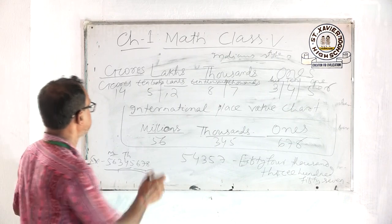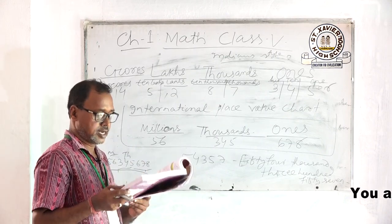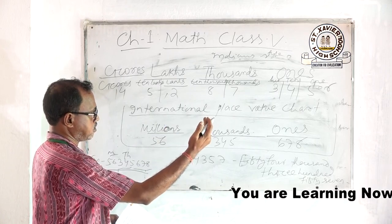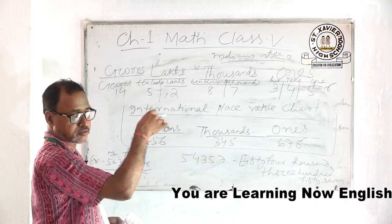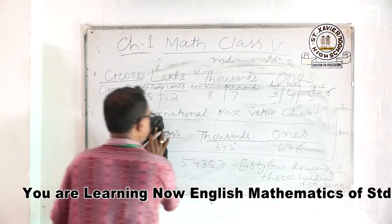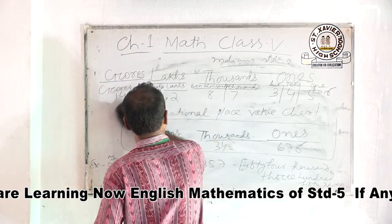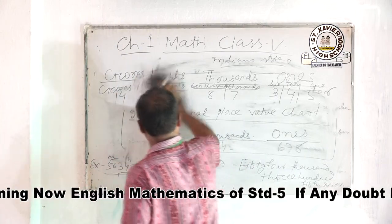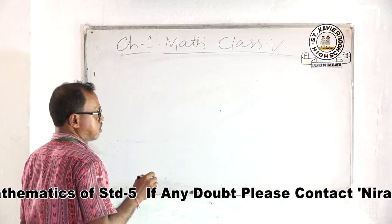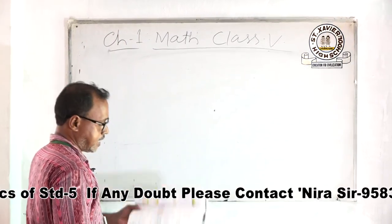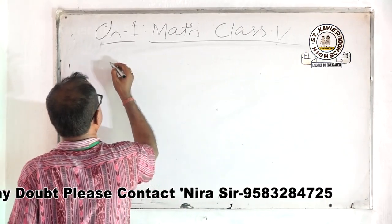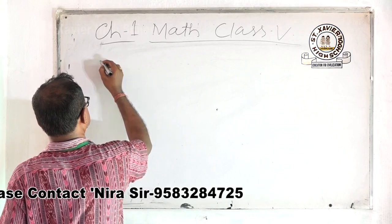The international way is quite easy — you have to find three digits from the right, put a comma after three, then after three again. I will show you examples — the simplest way to write or find the place value.